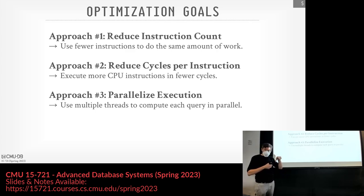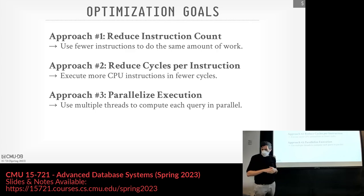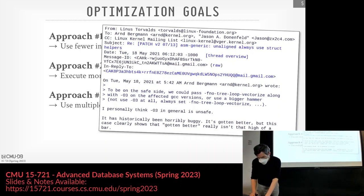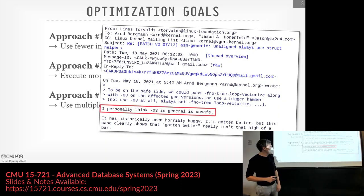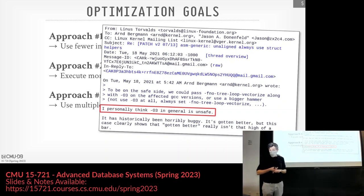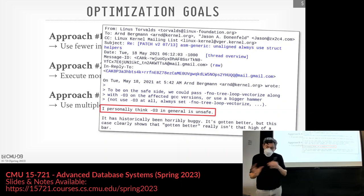You typically don't want to ship your database system with -O3. This is sort of well known in systems — O2 is about as far as you want to go in terms of aggressiveness on compile optimizations. This is a mailing list post from Linus Torvalds from 2021. He says 'I personally think O3 is in general unsafe.' So O2 optimizations will help us reduce instruction counts, and maybe O3 could be a little bit better, but it could have problems we don't want to ship our code with. O2 is about as far as we're going to go, so there'll be other things we have to do in our own implementation.